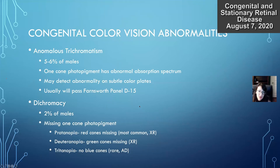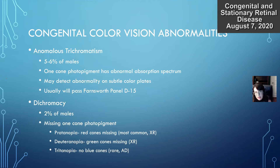Dichromacy occurs in 2% of males — they're actually missing one of the cone photopigments. Absence of red cones is the most common deficiency and is X-linked; missing green cones is the next most common. Patients missing red cones can detect green in isolation but not red in isolation, and combined they have difficulty with both green and red. It's very similar for patients missing green cones — they can't see green in isolation, but combined they have difficulty with both. It's essentially red-green color blindness.